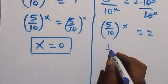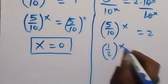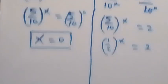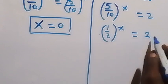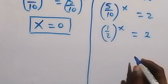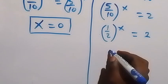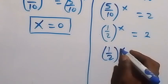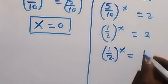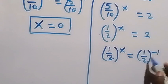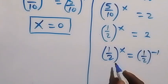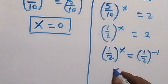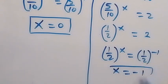We reduce 5 over 10 to one half, so one half raised to power x equals 2. Writing 2 as one half raised to power minus one, we have one half raised to power x equals one half raised to power minus one. Since the bases are the same, x equals minus one. Thank you for watching — please share this video, subscribe to my channel, and see you next class. Bye for now.